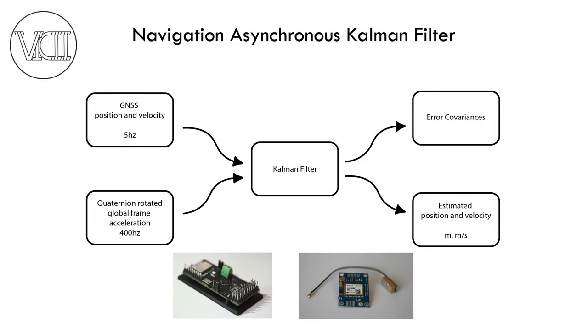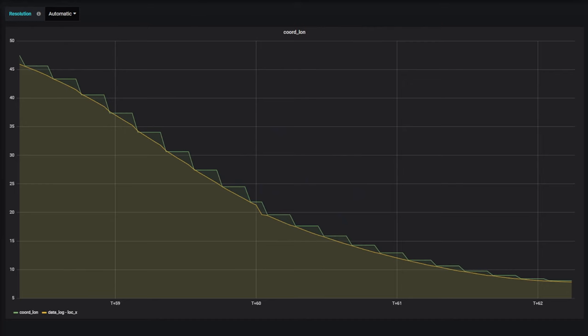To solve that issue I've implemented a navigation asynchronous Kalman filter. This filter takes the raw GNSS data combined with accelerations that are rotated from the local frame to the global Earth's frame using the orientation we calculated before. What's cool about this is that the accelerations fill in the gaps for the GNSS data, leading to way smoother, more reliable data. The filter outputs velocity and position in relation to the starting point in meters per second and meters respectively.